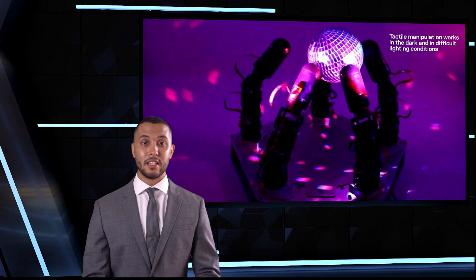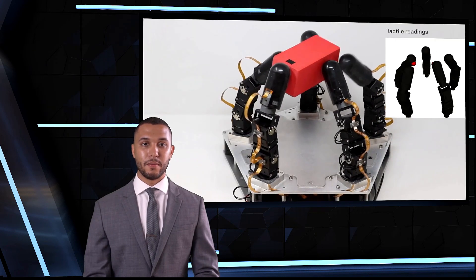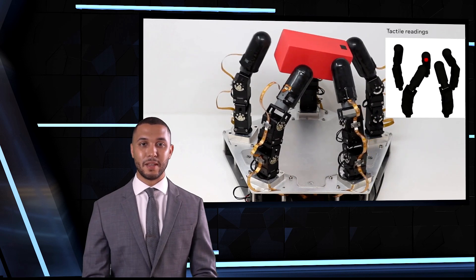The researchers use an integrated pressure and proximity sensing system that enables the robot to grasp and manipulate objects in real time. The system uses a combination of sensors to measure the pressure and proximity of the fingers to the object, allowing the robot to sense the shape and texture of the object it is manipulating.